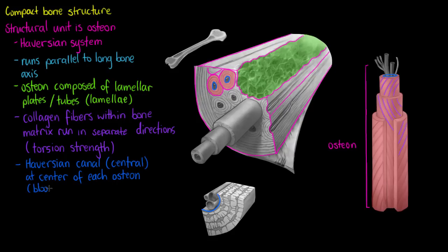And the reason we have these central canals is so that we can allow the passage of blood vessels and nerves through these osteons. Because we have live tissue and live cells all throughout our bones. So we need to be able to supply them with nutrients and oxygen as well.